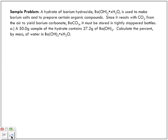Sample problem: A hydrate of barium hydroxide, Ba(OH)2·XH2O, is used to make barium salts and to prepare certain organic compounds. Since it reacts with CO2 from the air to yield barium carbonate, BaCO3, it must be stored in tightly stoppered bottles. Part A: A 50.0 gram sample of hydrate contains 27.2 grams of barium hydroxide. Calculate the percent by mass of water. The whole sample is 50.0 grams, the total sample.